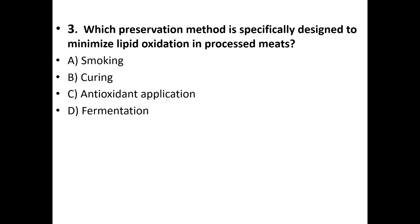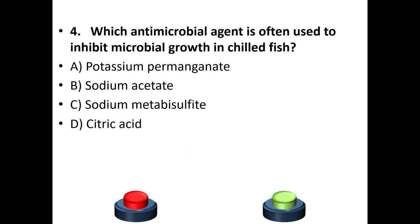Third question: Which preservation method is specifically designed to minimize lipid oxidation in processed meats? Options: smoking, curing, antioxidant application, fermentation. The answer is option C — antioxidant application.